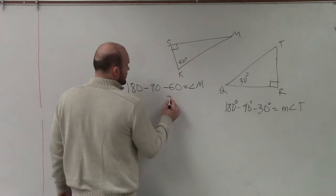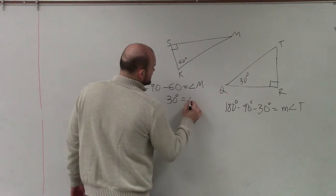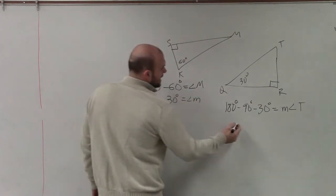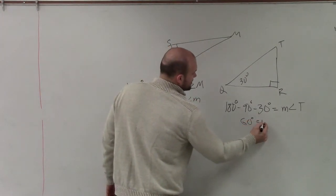And when you guys do this work, what you'll notice is 30 degrees equals the measure of angle M, and 60 degrees equals the measure of angle T.